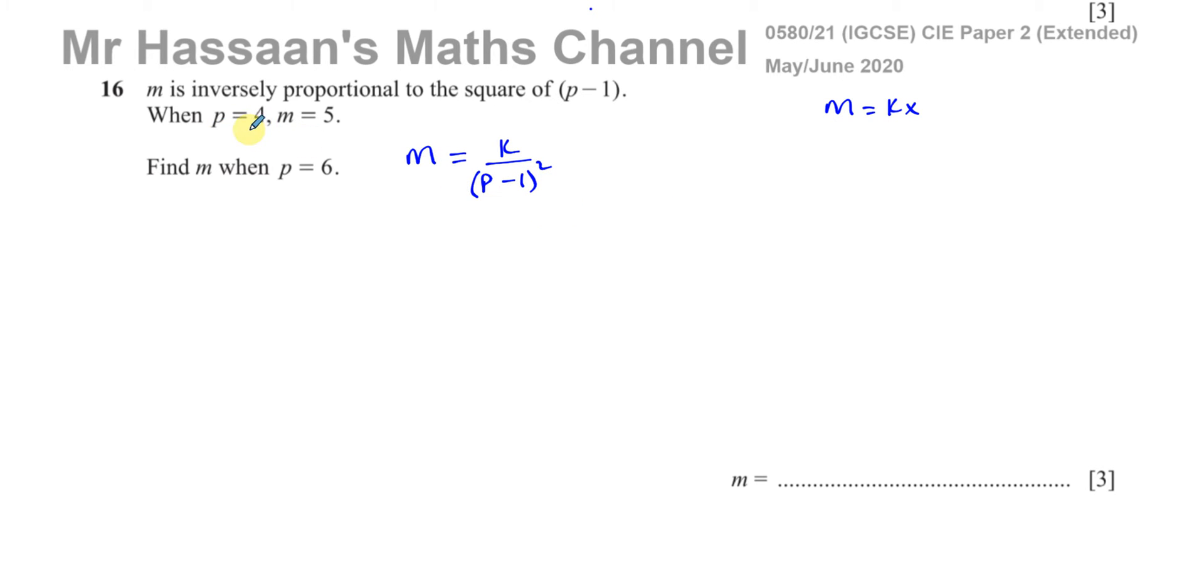So now they've given us one pair of values. When p equals 4, m equals 5. So we need to find the value of k before we can find any other values. We need to find the equation that connects m and p. And that equation is going to be equation once we've found k, we will be able to find any other values that we need to find.